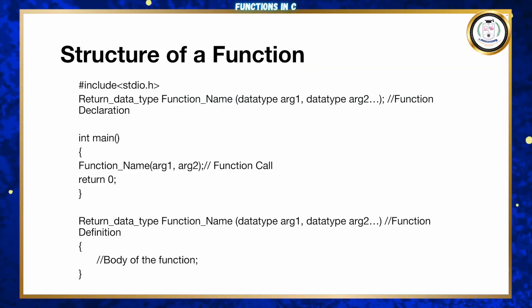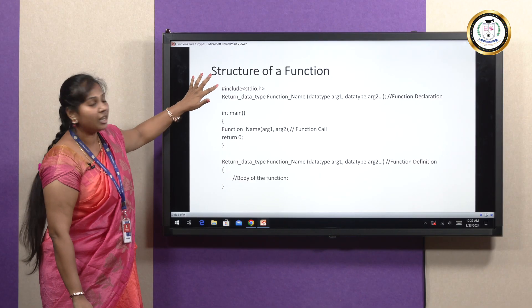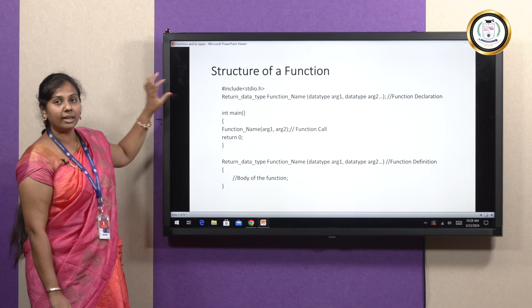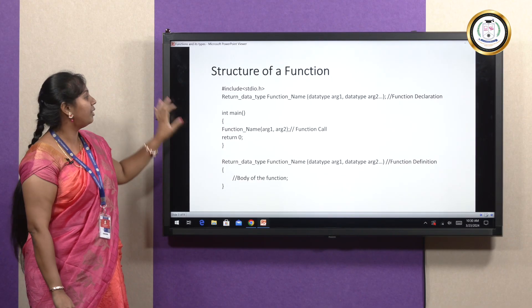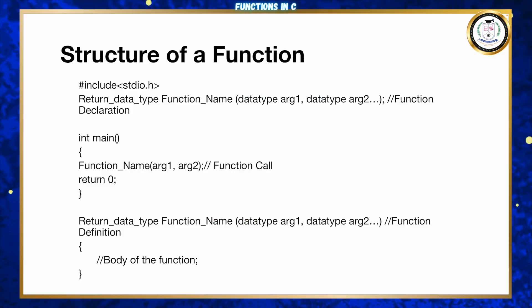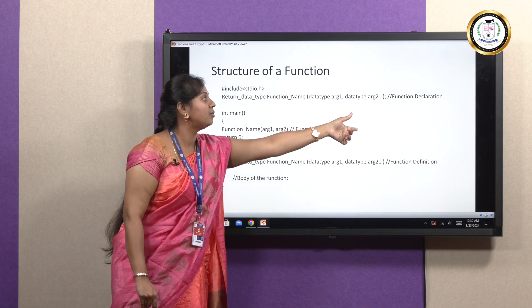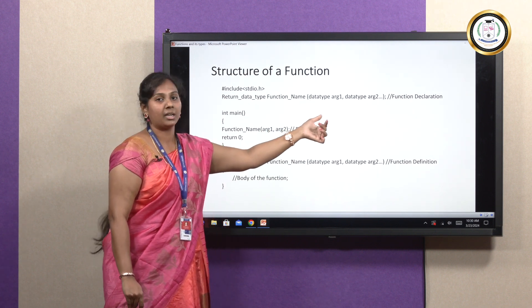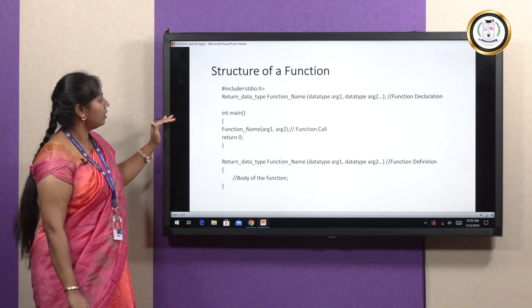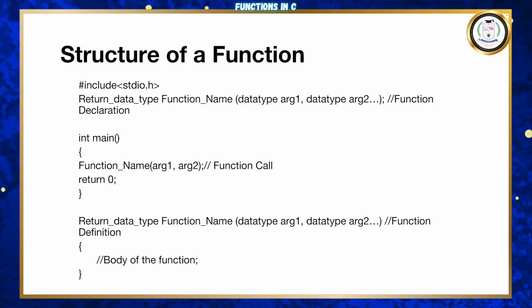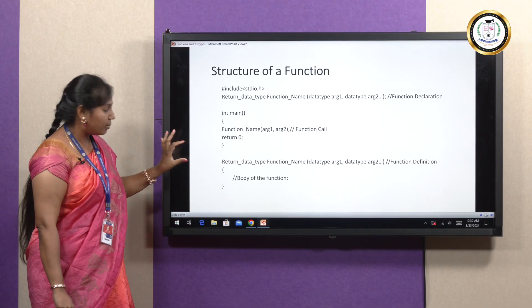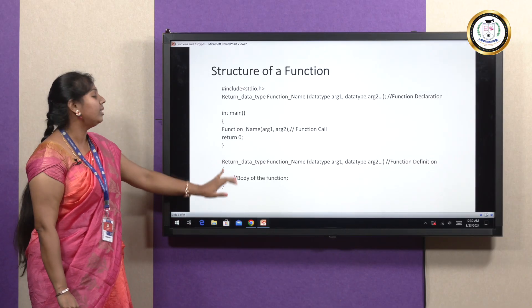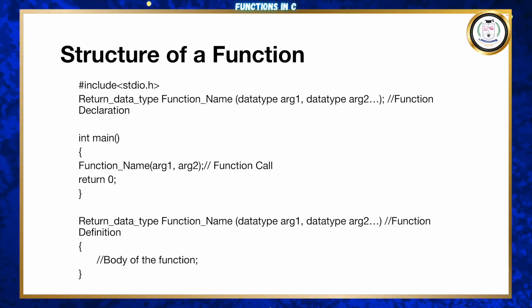For user-defined functions, we need to define the functions in our program and can use them as many times as we want. The basic structure includes: first, including the stdio.h header file; then declaring the function, specifying the return type, the function name, and the arguments along with their data types; then the main function; and after that, the actual function definition — called the body of the function — where you define what the function is going to do.